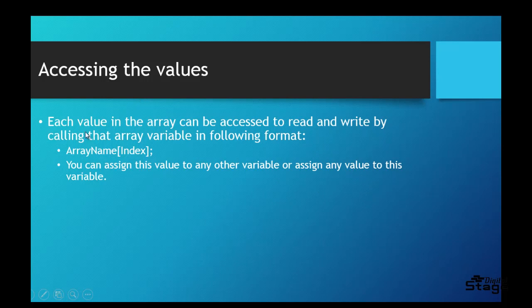Accessing the values: the values in the array can be accessed to read and write by calling the array variable with a given index in square braces. That way you can either change the value at a particular location in the array, or do something with that value. You can assign this value to any other variable, or assign any value to this location. We'll look at some code to see what I'm talking about.